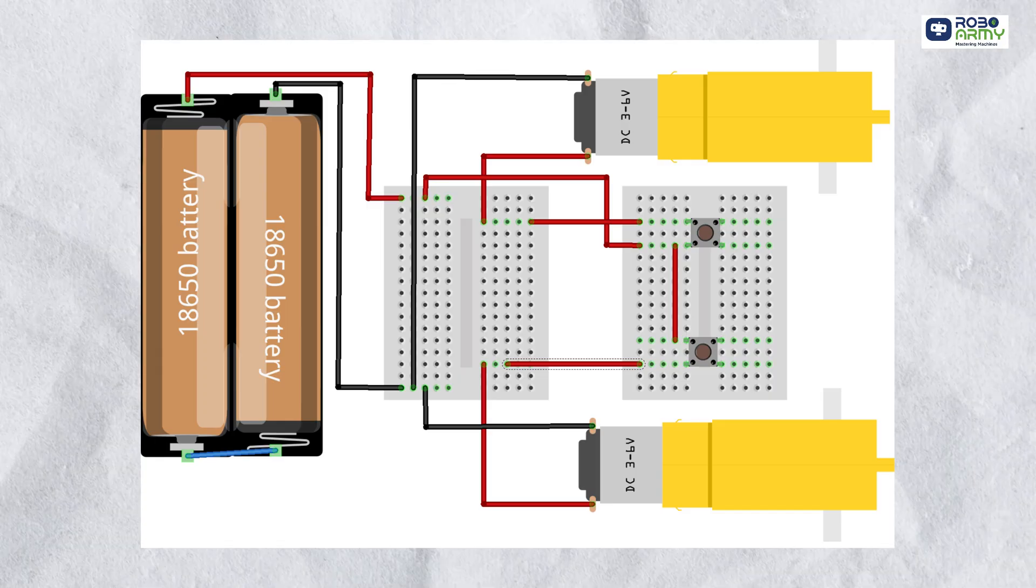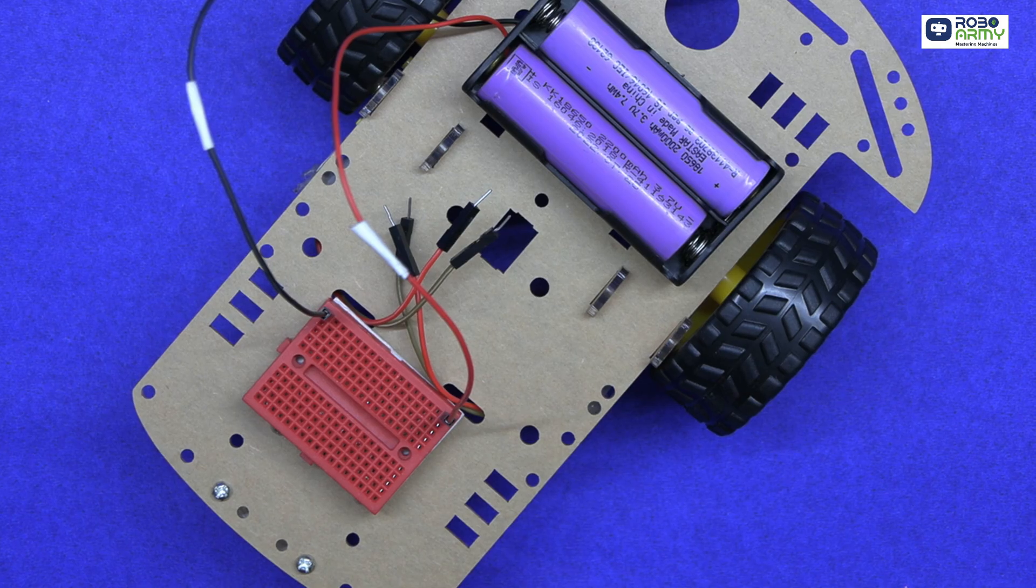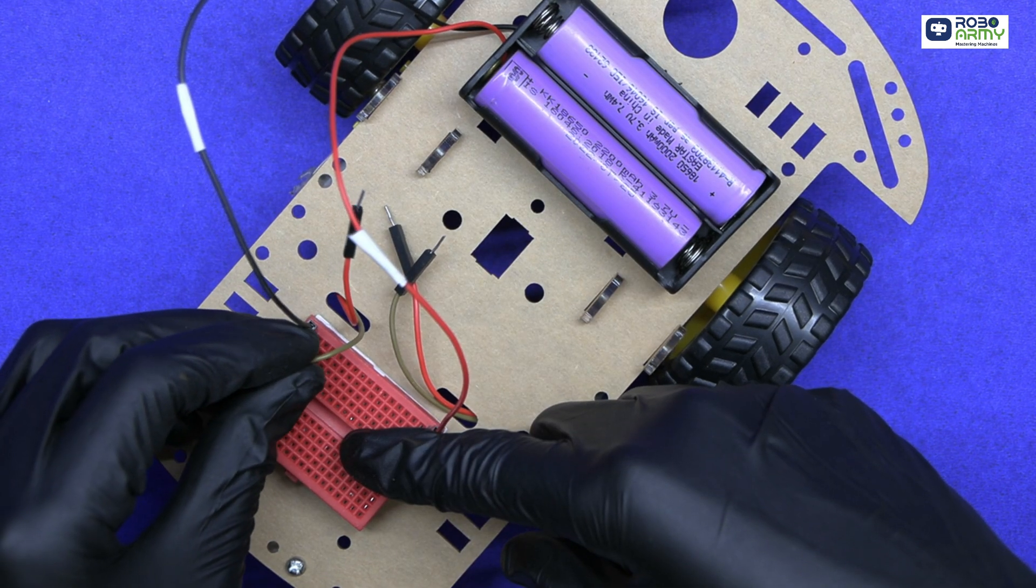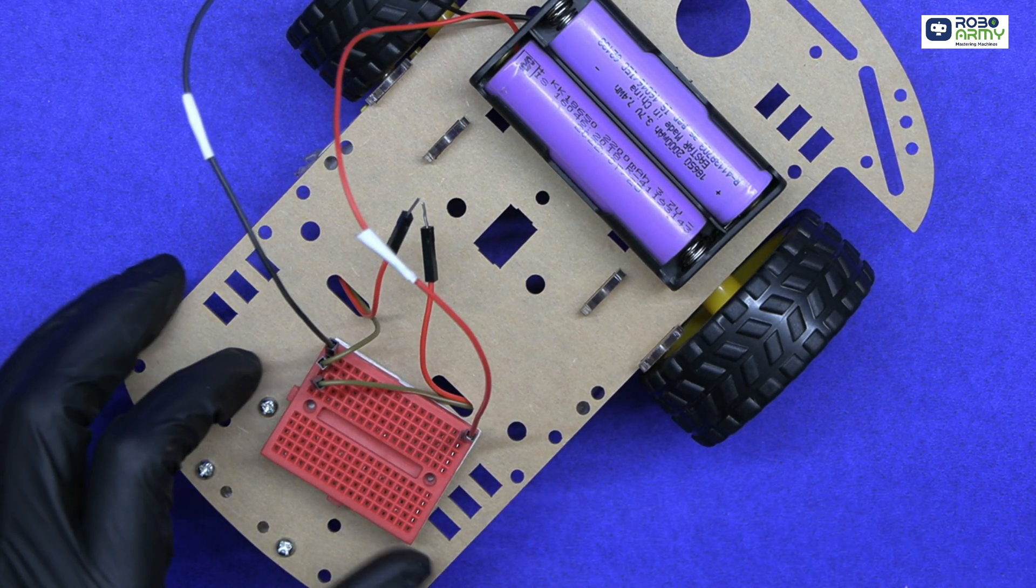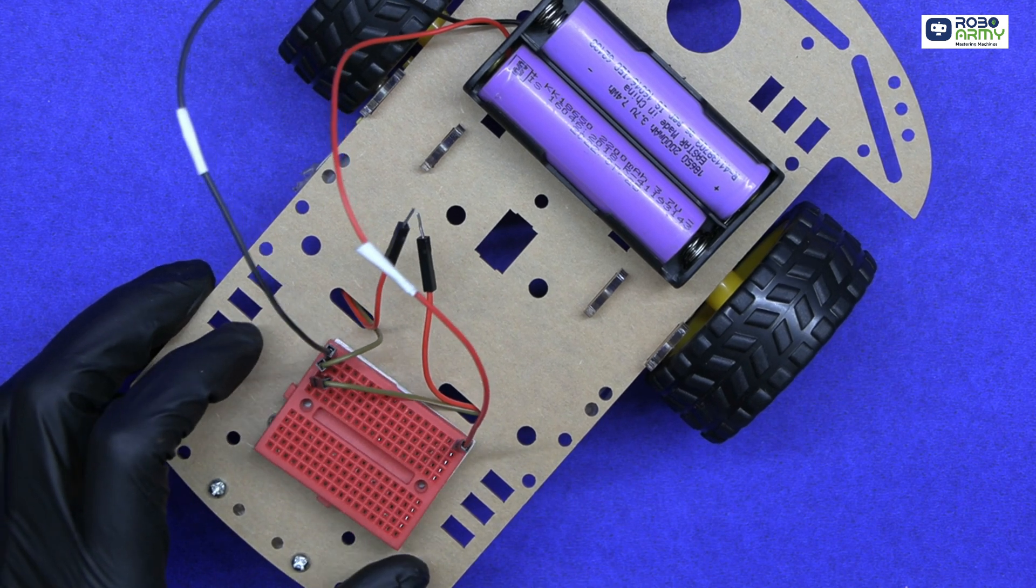Let's set up the circuit for the robot. Refer to the wiring diagram in the description or pause the video to view the on-screen circuit diagram. Now take the first breadboard for the robot circuit. Connect battery pack red and black wires to different rows. Connect negative wires of motor to the same row as the battery pack's black wire. Leave red motor wires disconnected for now.